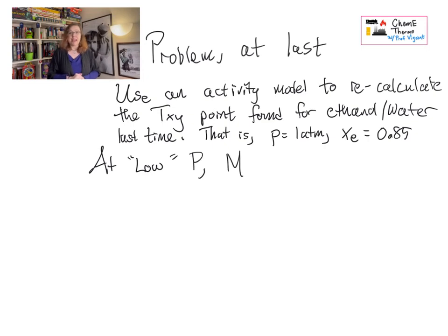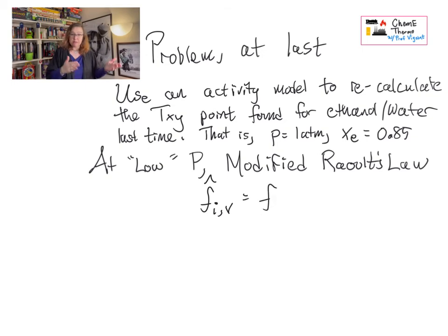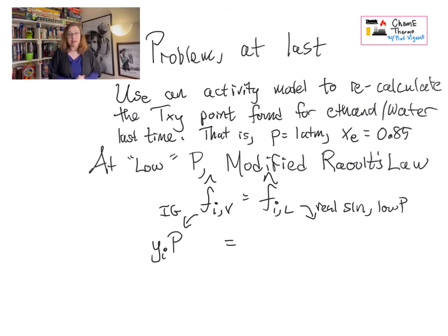And so we're going to need to use something that captures this non-ideality. And so we're going to use what's called an activity model. And we're going to use an empirical activity model. And we're going to jump right in and use it. In fact, before I've explained how it works, we'll do that next time. So we're going to use modified Raoult's law and this activity model. So Raoult's law, we're ahead of Raoult's law. No assumptions at all. Fi vapor equals Fi liquid with the little hats on. We're going to assume ideal gas on the vapor side. That's Yip. We are not going to assume ideal solution on the liquid side. But we are going to assume low pressure, which is a good assumption at atmospheric pressure.